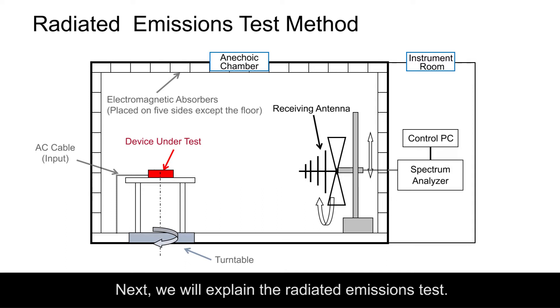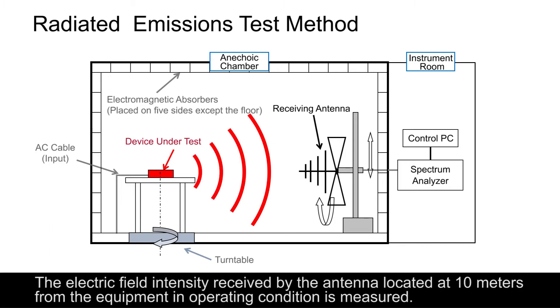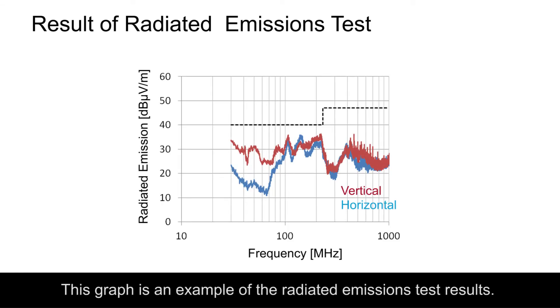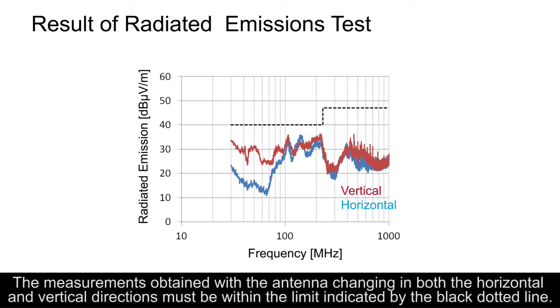Next, we will explain the radiated emissions test. In this test, the electromagnetic radiation level from the equipment is measured to make sure that it does not exceed the limit. The electric field intensity received by the antenna located at 10 meters from the equipment in operating condition is measured. Similar to the conductive emissions test results, the X-axis represents the frequency and the Y-axis shows the level of electromagnetic radiation. The measurements obtained with the antenna changing in both the horizontal and vertical directions must be within the limit indicated by the black dotted line.